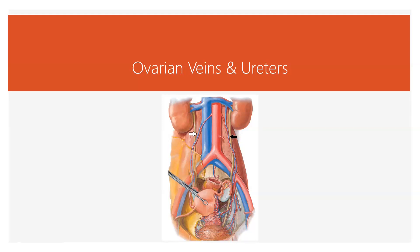And then you can get compression. Here's the psoas, there's the external iliac artery right here. It usually crosses right here.